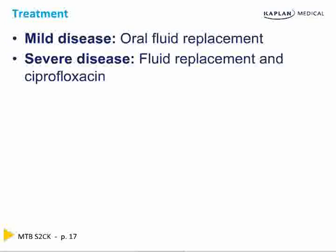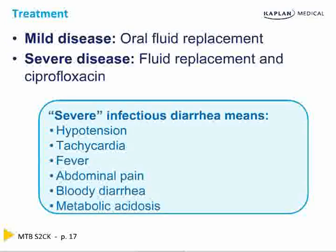Severe disease means hypotension, tachycardia, fever, abdominal pain, blood in stool, and metabolic acidosis — because the colon is a bicarbonate-secreting organ. You don't need every single one, but two or three minimum. Just tachycardia alone, or just fever alone, is not enough. When the picture is clearly severe, give ciprofloxacin or a fluoroquinolone.